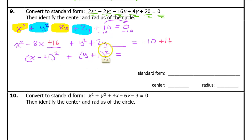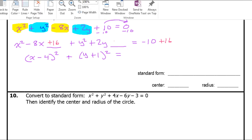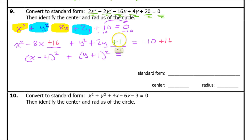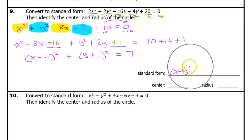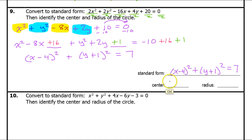Adding up the right side: negative 10 plus 16 is 6, plus 1 is 7. So the standard form equation is x minus 4 squared plus y plus 1 squared equals 7. The center is the opposite of each number: (4, -1). The number 7 is the radius squared, so the radius is the square root of 7, which is approximately 2.65.